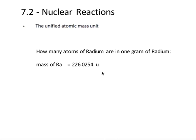We want to know how many atoms of radium are in one gram of radium. We're told that the mass of radium is 226 U, and the thing that we need to know here is that U stands for atomic mass units.